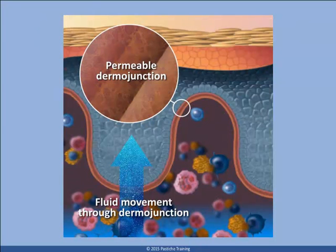The dermajunction is made of sinusoidal connective tissue, so named because it is filled with holes, pockets and channels that allow the movement of fluids and immune cells to move through from the dermis to epidermis. The epidermal side of this junction is called the basal laminar, and it is onto this that the melanosome would rest, after not being picked up by the ascending keratinocyte.